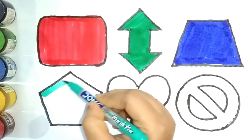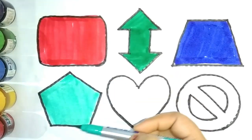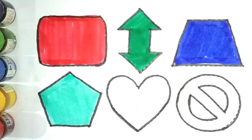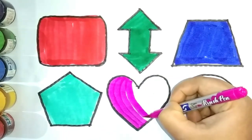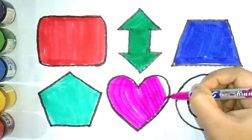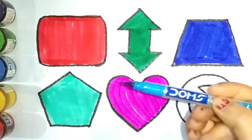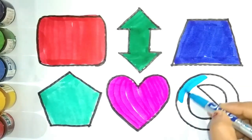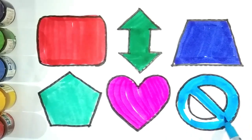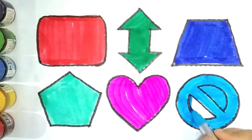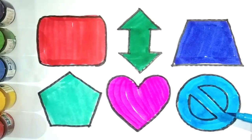Sea green color — this is sea green color, and this is a pentagon. Pink color — this is pink color, and this is a heart. Sky blue color — this is sky blue color, and this is a no symbol.